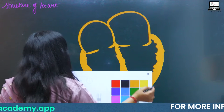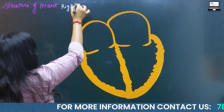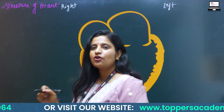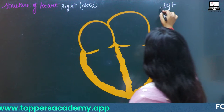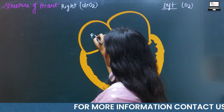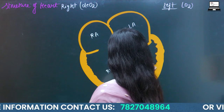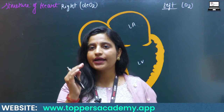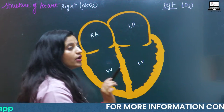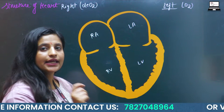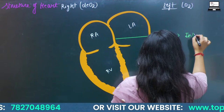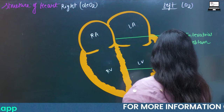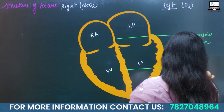The right side of the heart carries deoxygenated blood, and the left side carries oxygenated blood. This is your right atrium, left atrium, right ventricle, and left ventricle. Oxygenated and deoxygenated blood are separated by the interatrial septum between the two atria. The ventricles are also separated by the interventricular septum, which is made up of connective tissue.